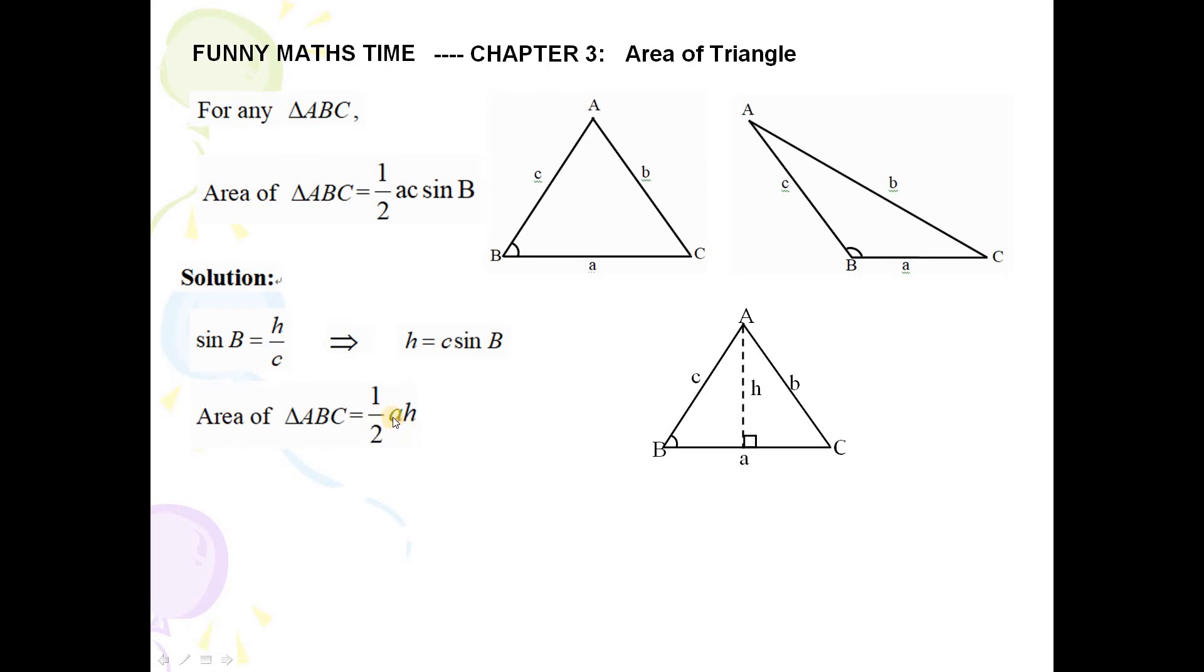Here we keep A, and h I put this expression in. It means one over two A times C times sine B, which is our equation formula of triangle ABC.